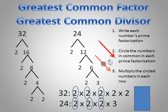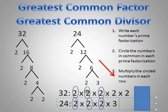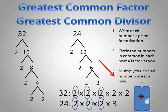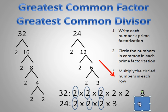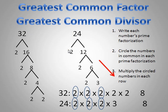Now I multiply the circled numbers: two times two times two equals eight. You'll find that multiplying the circled numbers from the bottom row also gives eight — two times two times two is eight. So the greatest common divisor is eight. Eight is the biggest number you can divide both thirty-two and twenty-four by, and it's the greatest common factor — the largest number you can multiply by something else to get both twenty-four and thirty-two.